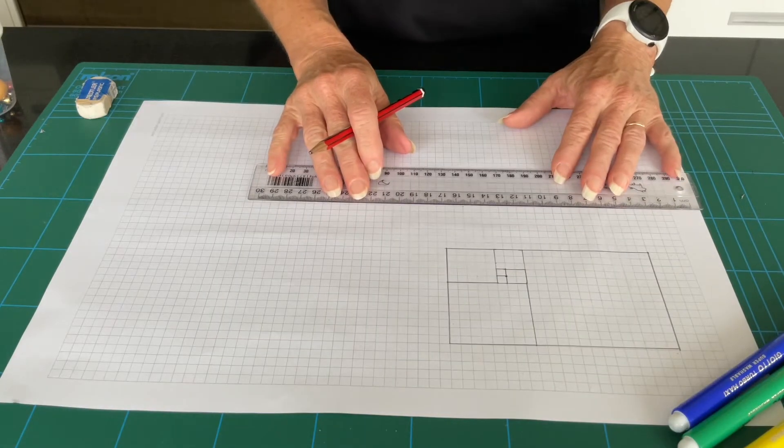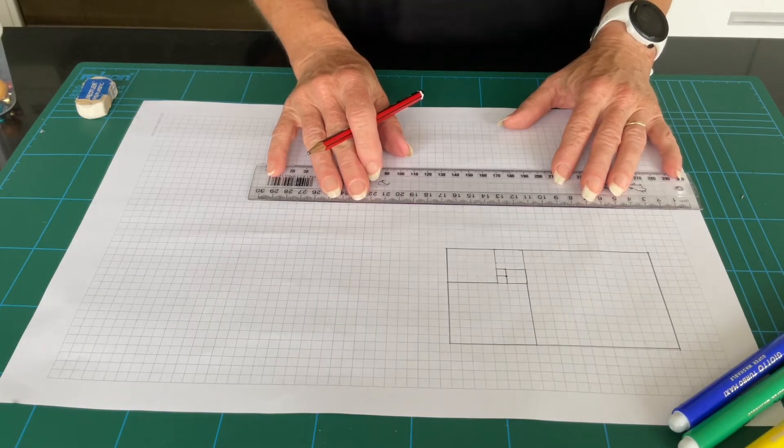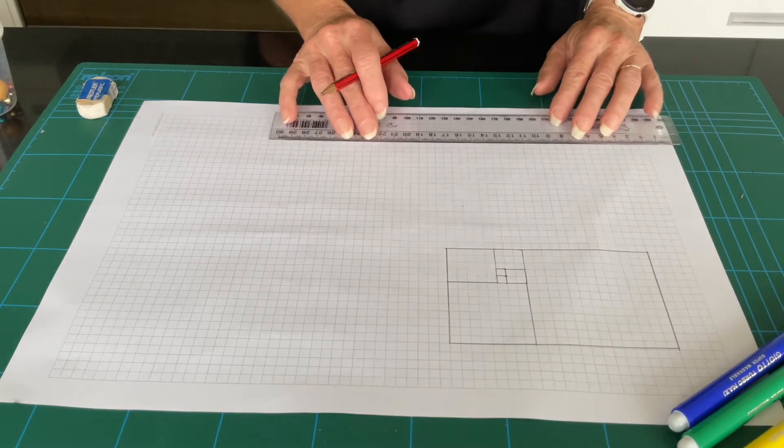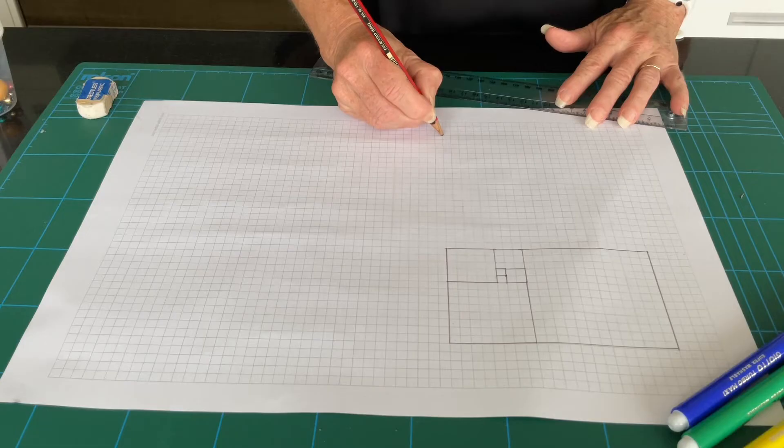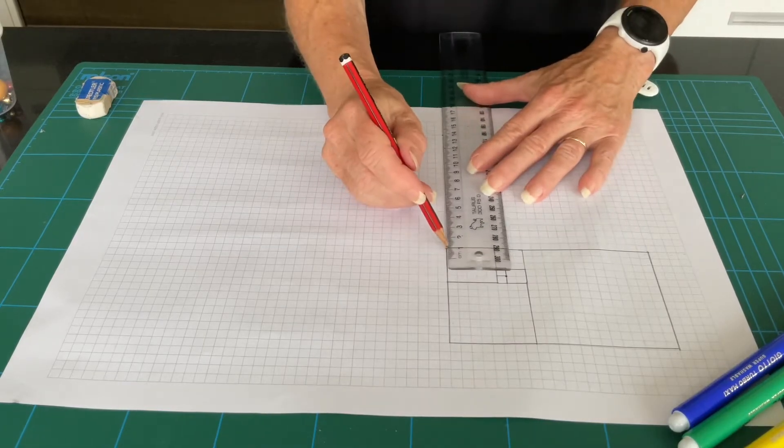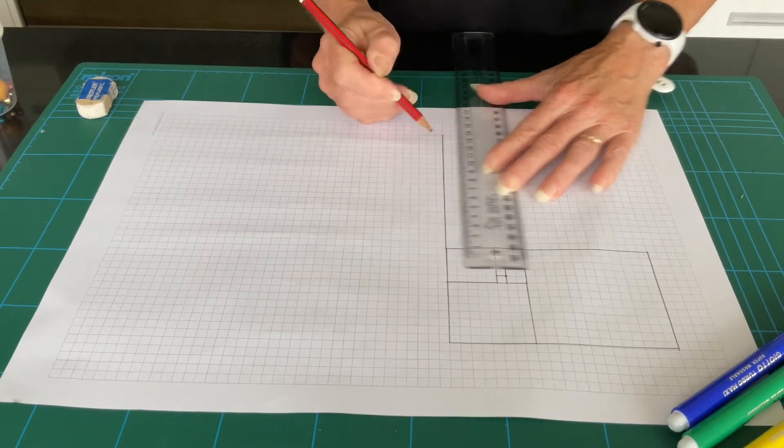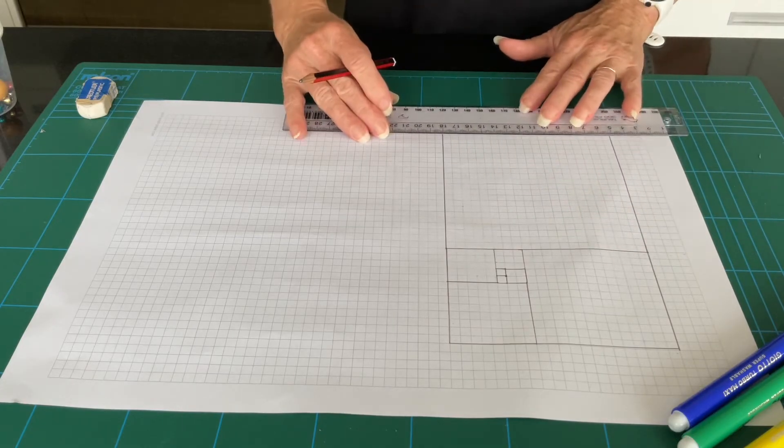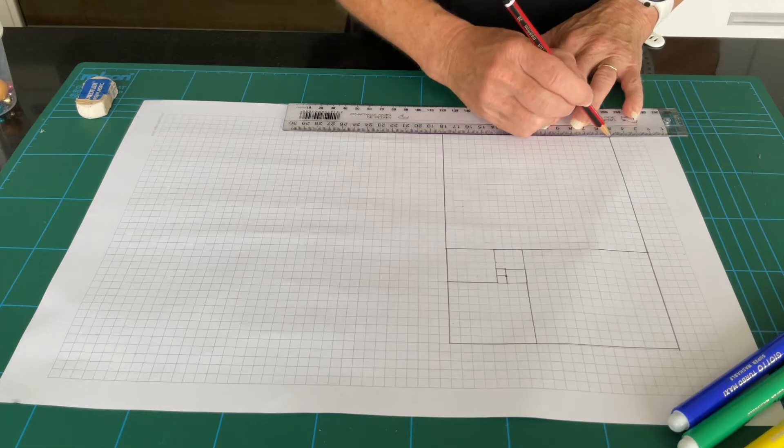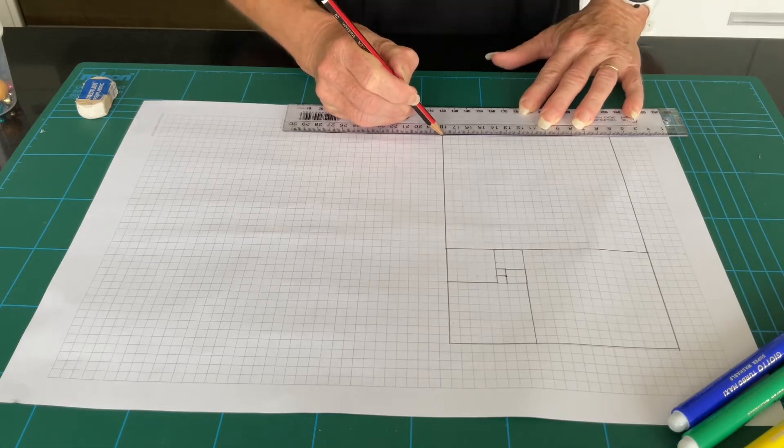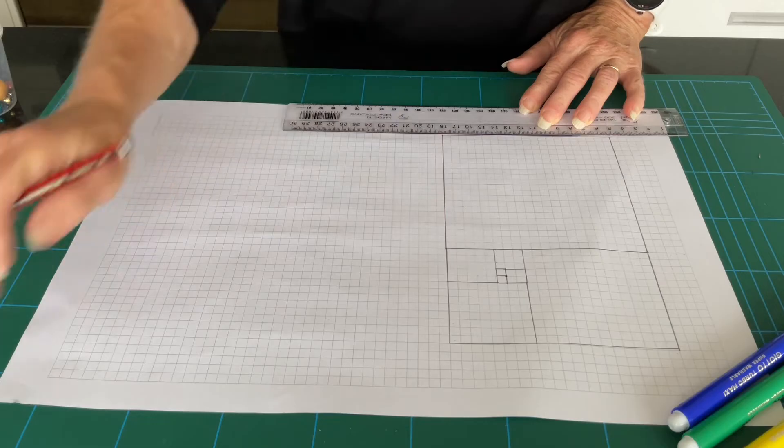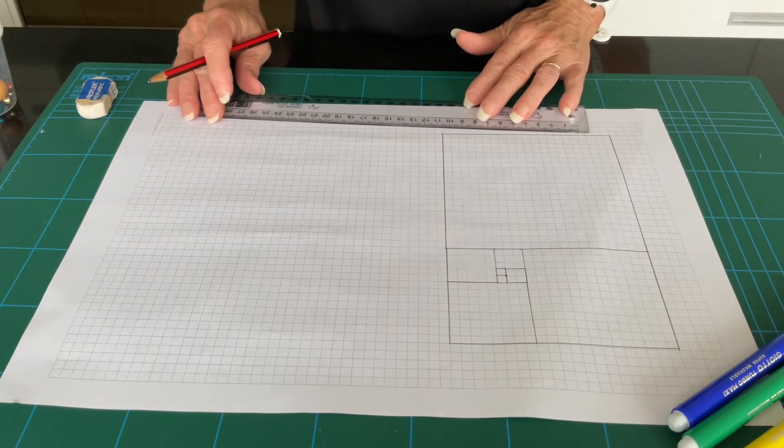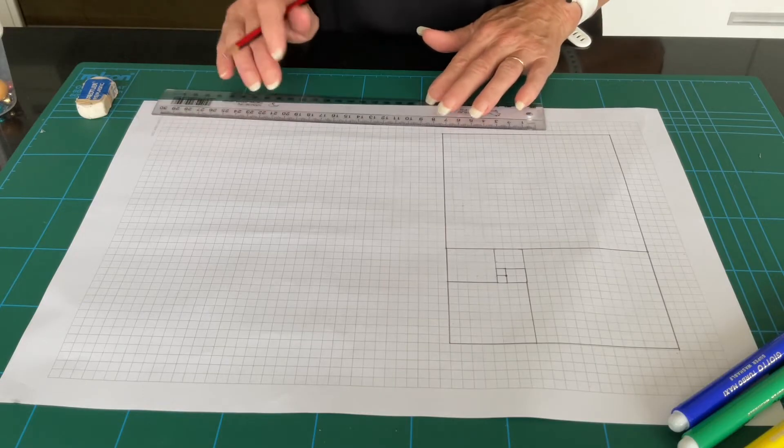The next number in the sequence is 21. Draw this immediately above the rectangle that you have. And the last number in the sequence is 34. Draw this to the left-hand side of the rectangle that you have.